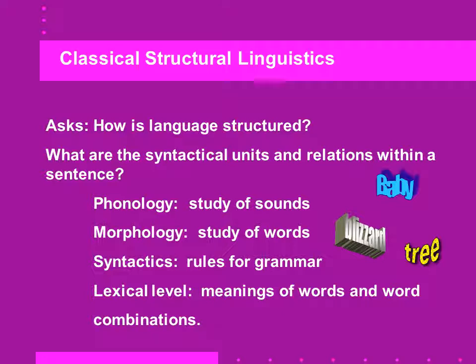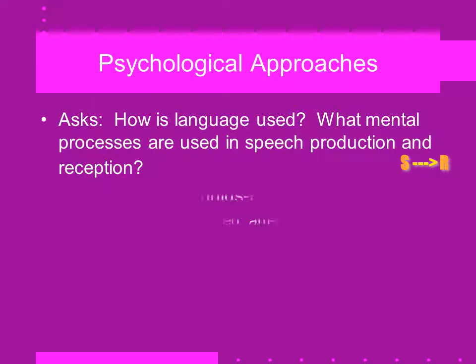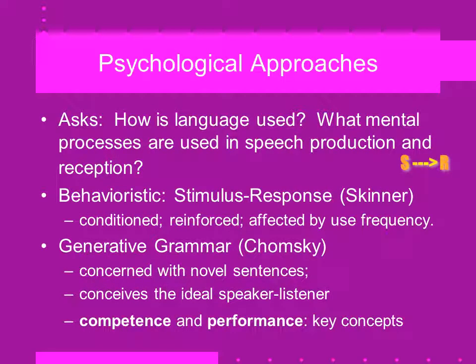As a footnote, the work of Ogden and Richards with the triangle of meaning, and the work of Osgood with his semantic space model, all have to do with the representational nature of language and how words represent something other than themselves. The psychological approaches ask: how is language used? What mental processes are used in speech production and reception?